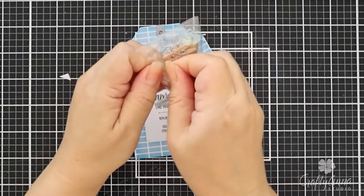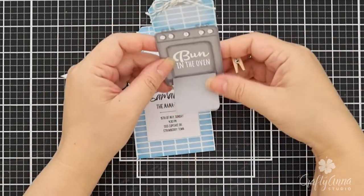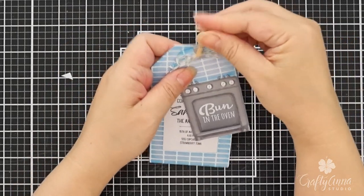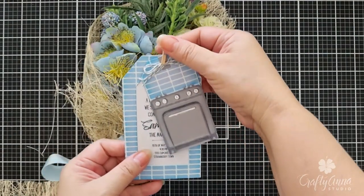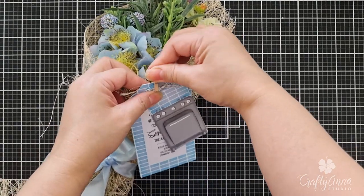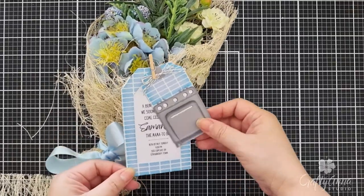To attach the tags onto a gift, I will use these tiny clothespins which came from another My Monthly Hero Kit. You can create these tags for many occasions, such as wedding giveaways, birthday party favors, even to attach to baked goods. Just change up the color scheme and sentiments.